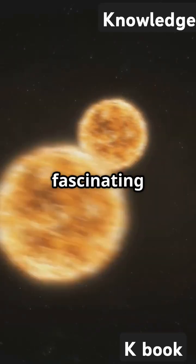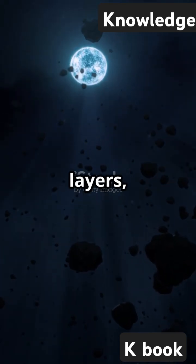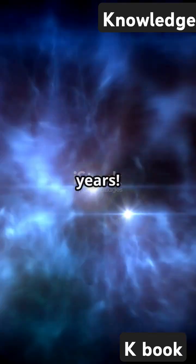At its heart, there's a fascinating binary star system. One star is a white dwarf, having shed its outer layers, while the other is still busy expelling gas. They orbit each other every nine years.